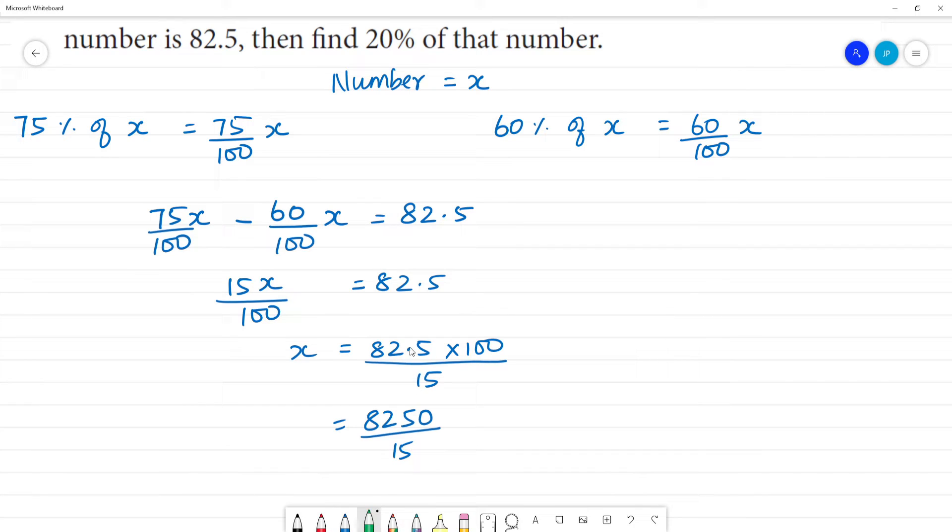Simplifying the calculation by removing decimal places. Performing the division step by step: 15 goes into 82 five times, into 75 five times, and into 0 zero times, giving us 550.